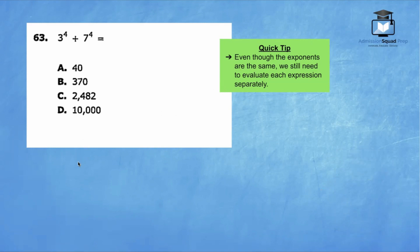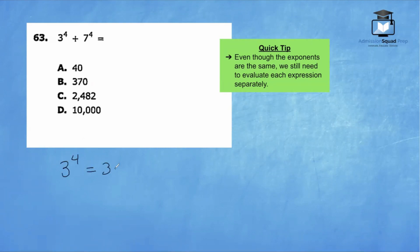For question 63 we have an exponent problem: 3 to the 4th power plus 7 to the 4th power. We're going to evaluate each of these exponents. 3 to the 4th power is 3 times 3 times 3 times 3, which is 81, because 3 times 3 is 9, 9 times 3 is 27, and 27 times 3 is 81.